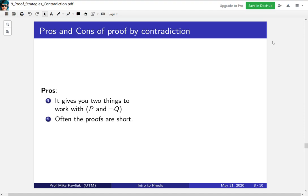The benefits are that it gives you two things to work with. Proof by contradiction allows you to work with both P and not Q. Typically, having more things to work with is better. Second, often proofs by contradiction are quite short, so there's less chance to make an error.